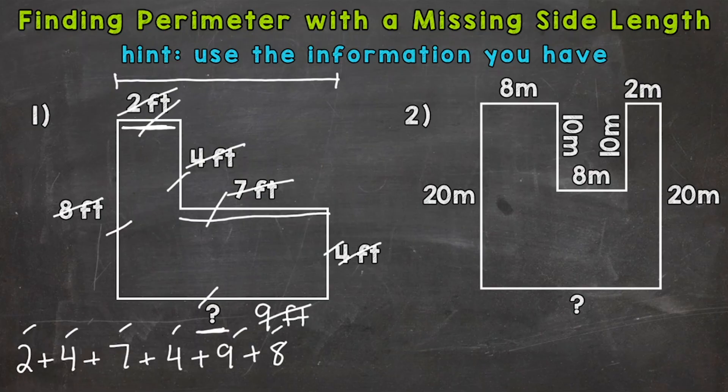Two plus four is six, plus seven is 13, plus four is 17, plus nine is 26, plus eight equals 34. And our unit of measure is feet. So our perimeter equals 34 feet.